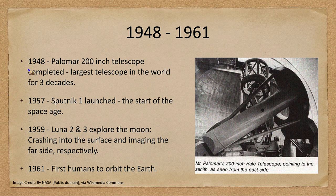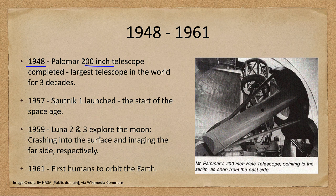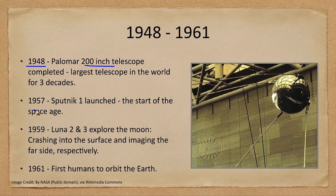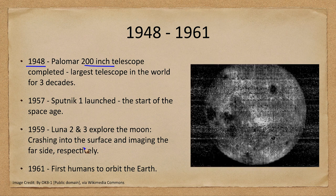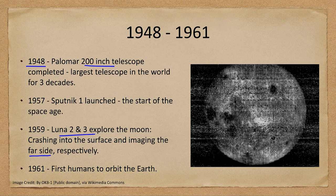After World War Two in the late 1940s, we saw the completion of the Palomar 200-inch telescope, which was the largest telescope in the world for over three decades. Jumping ahead to the space age, Sputnik 1 was launched as the first satellite into space. Shortly after, Luna 2 and Luna 3 explored the moon — Luna 2 crashing into the surface and Luna 3 imaging the far side of the moon for the first time in human history, since the moon always keeps one side locked toward Earth.